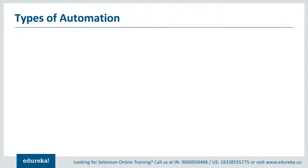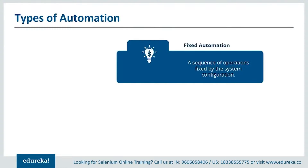Let's start off with understanding what is fixed automation. Fixed automation is the sequence of various operations that remains fixed and cannot be scheduled or customized by the user. This type of automation is mainly used in the mechanical industry to carry out a desired job.